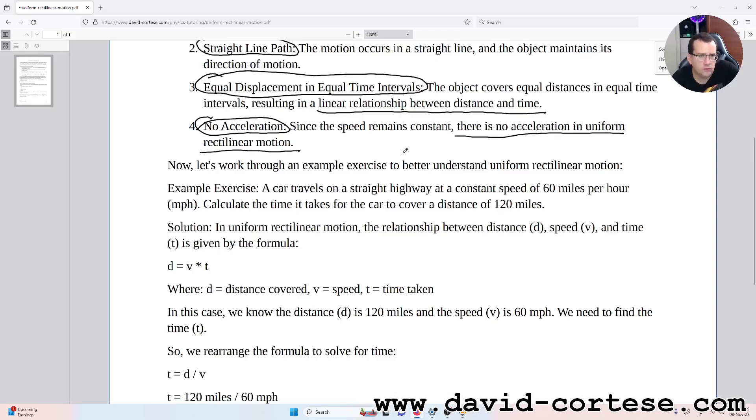Solution. In uniform rectilinear motion, the relationship between distance d, speed v, and time t is given by the formula d = v × t, where d is the distance covered, v is the speed, and t is the time taken.